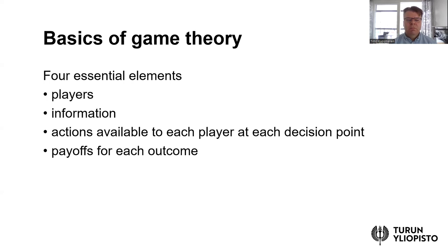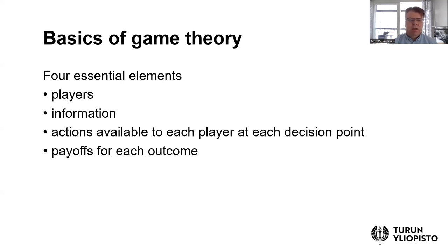We need to have some players. Then we need to define what kind of information these players have to make their moves. Then we define the actions available to each player at each decision point. And then what are the resulting payoffs from each outcome. With these elements, we can mathematically analyze whether there exist dominant strategies and what would be the likely outcome of the game — the so-called equilibrium of the game.